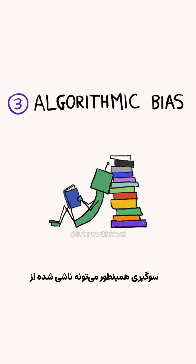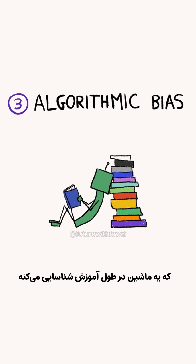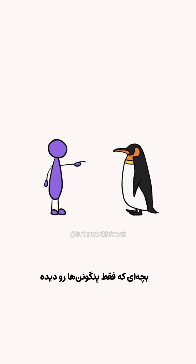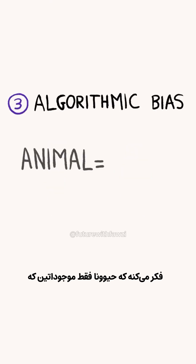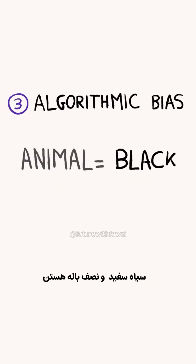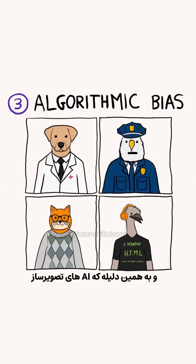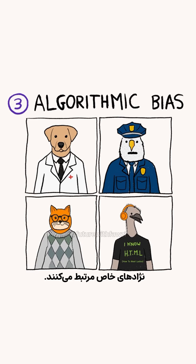Bias can also emerge from incorrect and oversimplistic rules that a machine identifies during training. The child who has only seen penguins would think that animals are only creatures that are black, white, and have flippers. And this is why image generators associate certain jobs with specific genders and races.